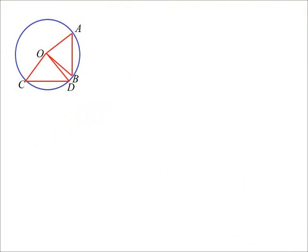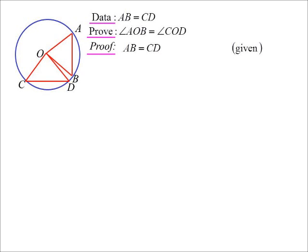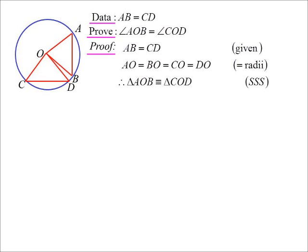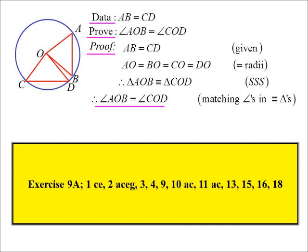The second part: let's show they subtend the same angle at the center. This is easier - we use side-side-side. AB equals CD (given), and all other sides are radii, so they're equal. By side-side-side, angle AOB equals angle COD as matching angles in congruent triangles. Now we have some questions using these angle and chord theorems.